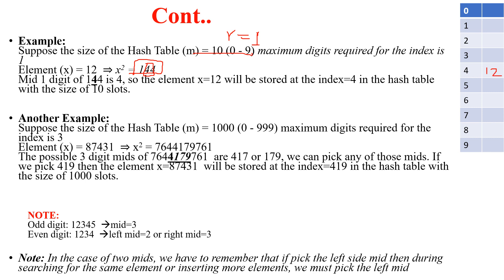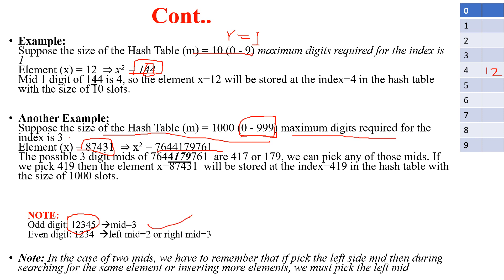The next example: the table size is 1000, so the maximum index range is 0 to 999. The maximum number of digits required for the index is 3, so R equal to 3. Suppose the given element is 431. If you square this, you will get a certain value. Now, there is one more concept: how do you calculate mid? If the squared result has an odd number of digits, there is a single mid. If it has an even number of digits, there are two mids — a left mid and a right mid.